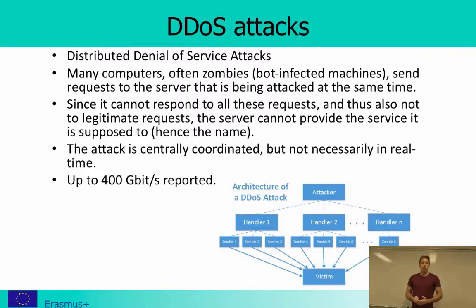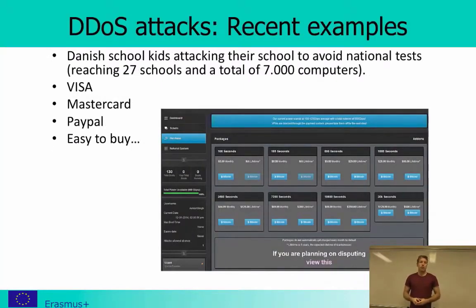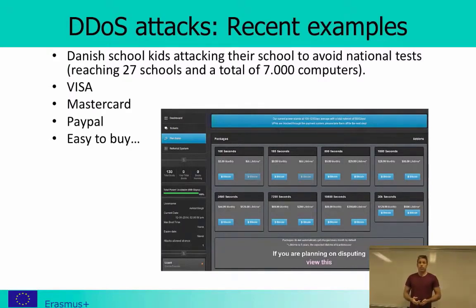In the figure, you can see a sketch of how it can be done. The attacker, standing behind it all, takes control through a number of handlers of all the zombies, who then attack the victim simultaneously. There is a story about a Danish school where school kids didn't want to do a national test, so they launched a DDoS attack on their school. They managed to interrupt the test not only at their own school, but in 27 schools, taking down a total of 7,000 computers — and these were just school kids who bought it online.